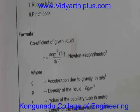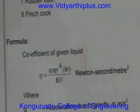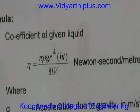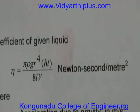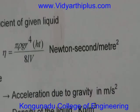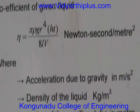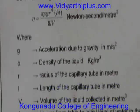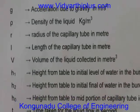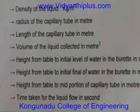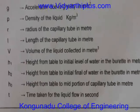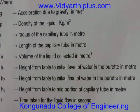The coefficient of viscosity is determined using the formula: eta = (π × ρ × g × r⁴ × h × t) / (8 × L × V). Here, pi is a constant, rho is the density of water, g is also a constant, r is the radius of the capillary tube, ht is obtained from the tabulation, L is the length of the capillary tube, and V is the volume of liquid, which is 5 × 10⁻⁶ cubic meters.